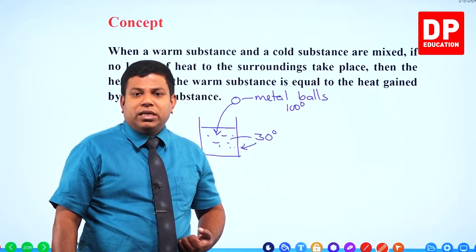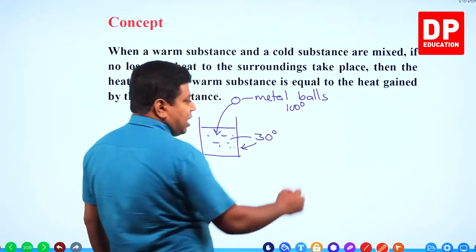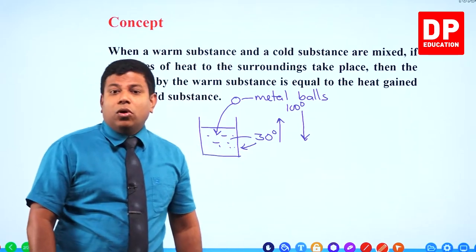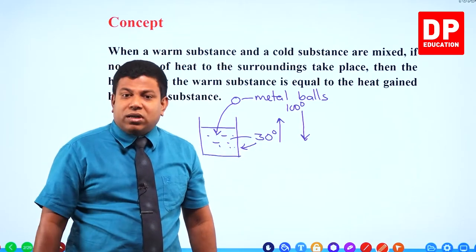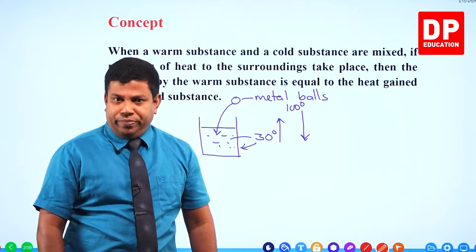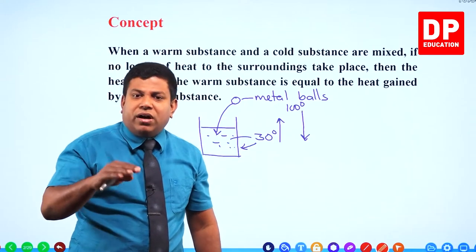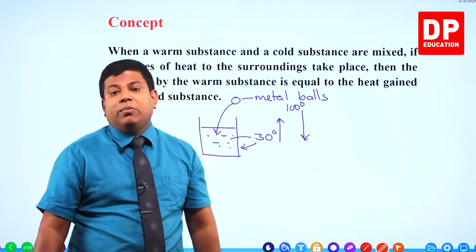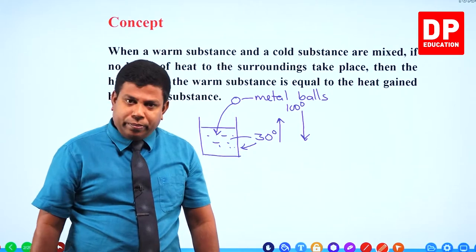The water temperature rises from 30 to 32, 34, 36, 38, 40, 42 — likewise it increases. At some point, the temperature of the metal balls and the temperature of water become equal, say at 42 degrees. Once temperatures are equal, there is no more heat transfer — that is called thermal equilibrium.